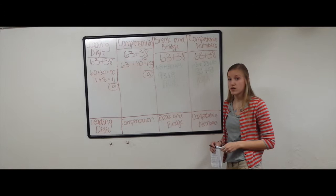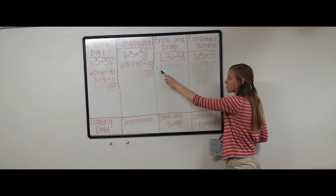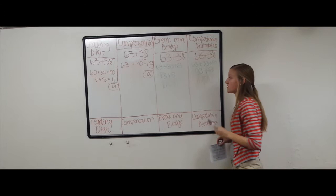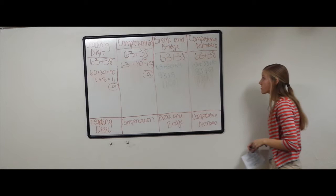Zach chose to use break and bridge to find the answer to this problem. He left the 63 from the original problem and broke apart the 38 into its place values by 30 and 8. 63 plus 30 gives you 93. Plus 8 to 93 gives you your answer of 101.